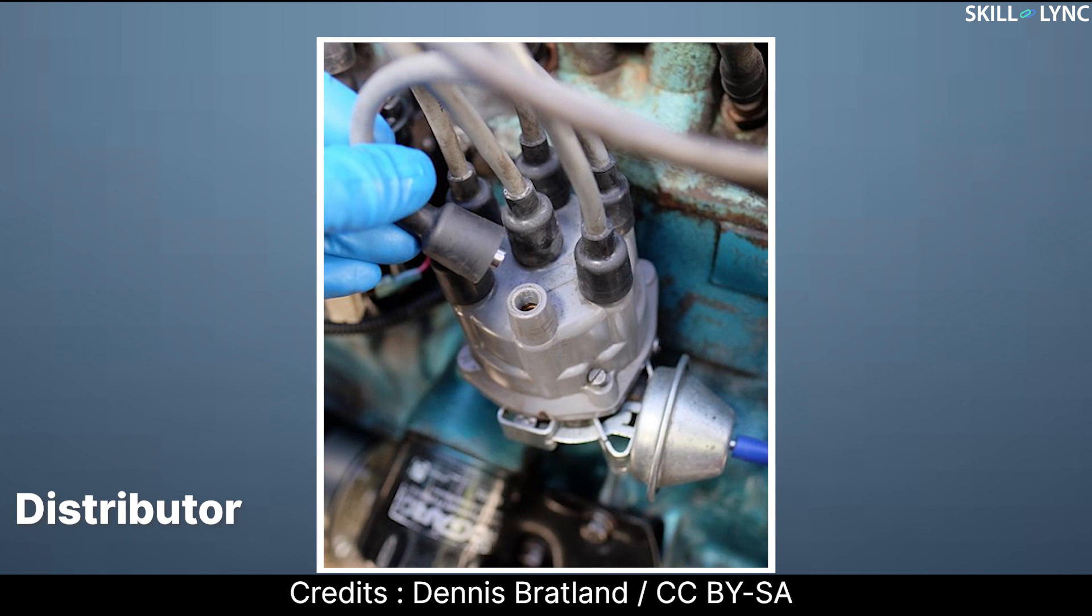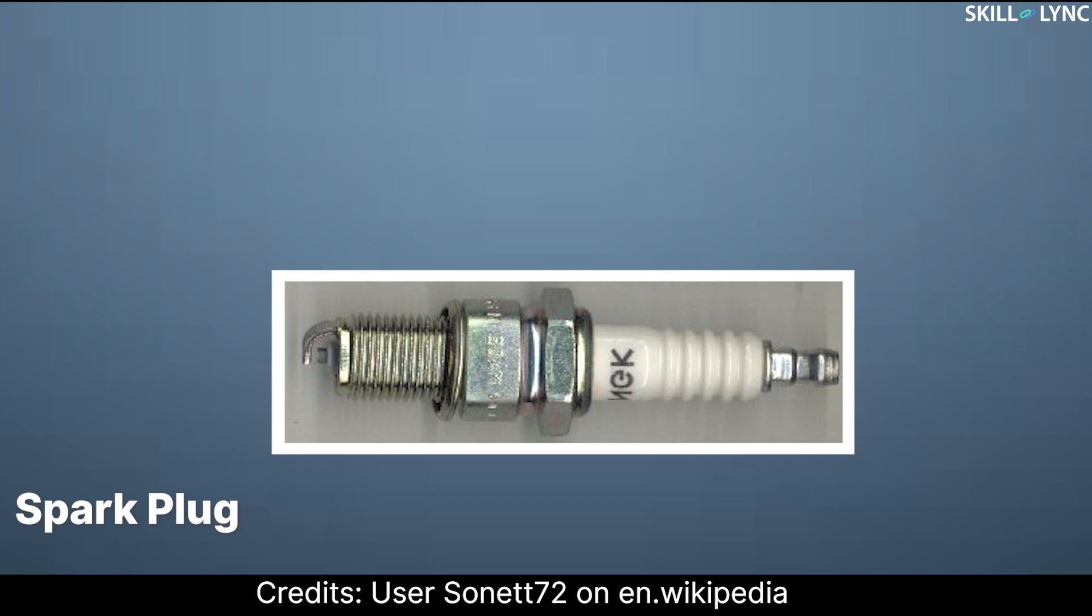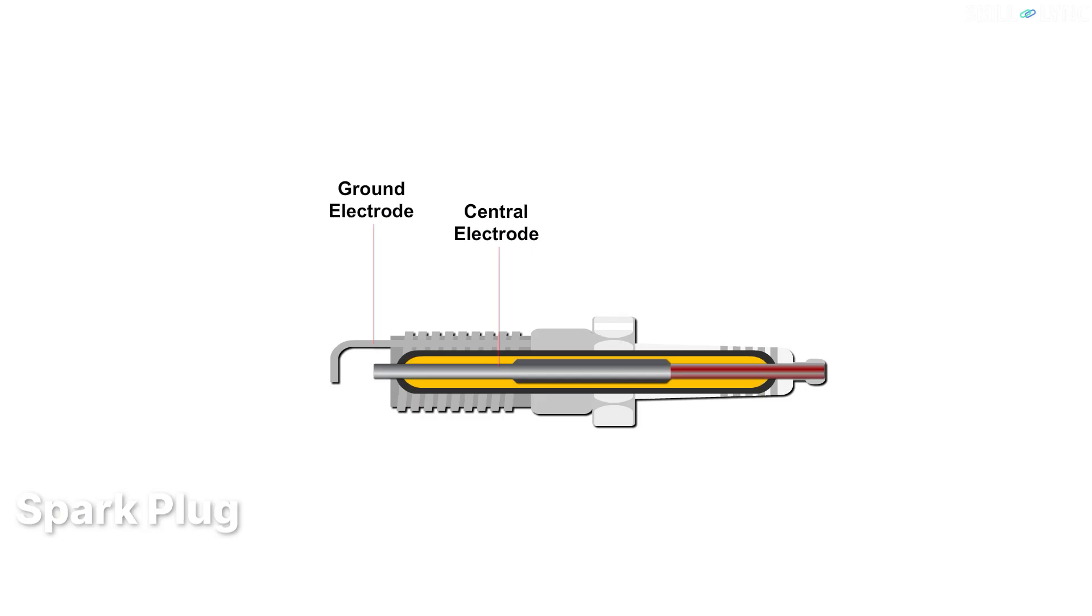Then there is a distributor that has a rotor in the middle and metallic electrodes on its outer surface. At the end, we have spark plugs that are used to initiate sparks. It consists of a central electrode and a ground electrode.